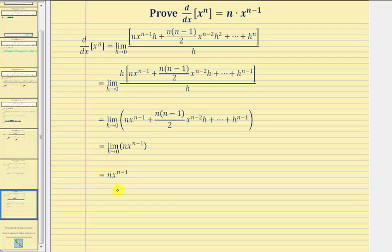And we have our proof of the power rule of differentiation: the derivative of x raised to the power of n with respect to x equals n times x raised to the power of n minus one. Of all the differentiation rules, this one is probably used the most in differential calculus. And now you know where it came from — I hope you found this helpful.